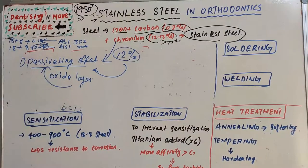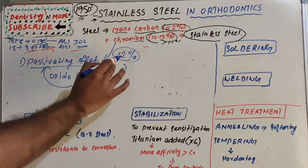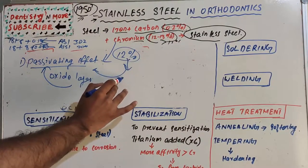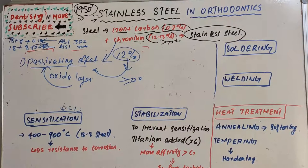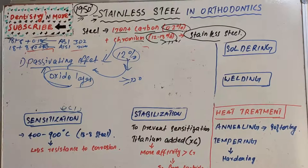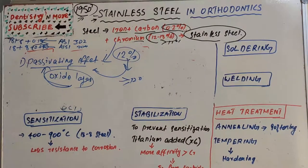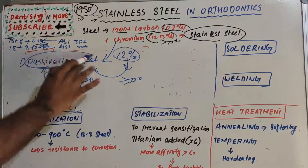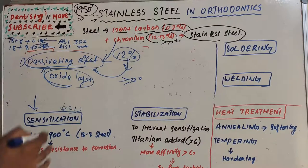The passivating effect exists only if the chromium amount is a minimum of 12% — that is the cutoff. If the oxide layer is ruptured by any mechanical or chemical means, protection against corrosion is lost. This loss of the oxide layer, resulting in susceptibility to corrosion and tarnish, is known as sensitization — in other words, the loss of the passivating effect of stainless steel.